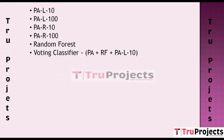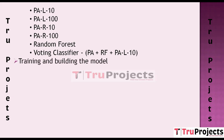PAR10 — Passive Aggressive with Relaxation 10 — incorporates relaxation in its updates, allowing for a more gradual change in model parameters when mistakes are made. This is useful when prioritizing stability over rapid adaptation. PAR100 — Passive Aggressive with Relaxation 100 — is a further relaxed version offering an even larger margin of relaxation, making it even more conservative in model updates.